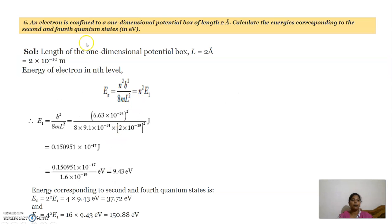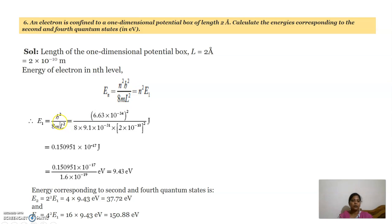The next problem: an electron is confined to a one-dimensional potential box of length 2 Angstroms. Calculate the energy corresponding to the second and fourth quantum states in electron volts. The given data is L equal to 2 Angstroms, which is 2 into 10 power minus 10 meters. The energy in the nth level is En equal to n square h square by 8mL square, or n square times E1. First we find the ground state: E1 equal to h square by 8mL square, substituting Planck's constant, mass, and L.